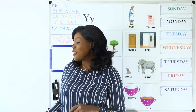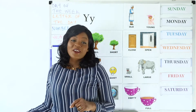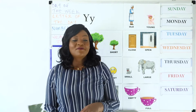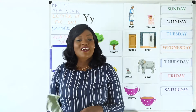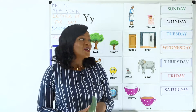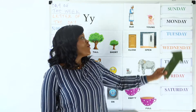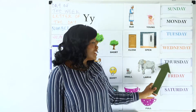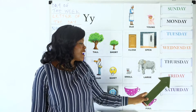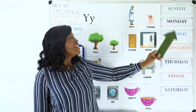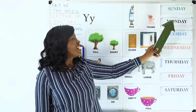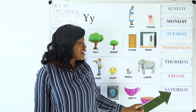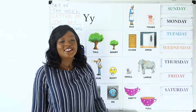There are seven days of the week, there are seven days of the week. We have Sunday, Monday, Tuesday, Wednesday, Thursday, Friday, Saturday. Sunday, Monday, Tuesday, Wednesday, Thursday, Friday, Saturday.